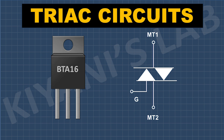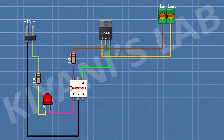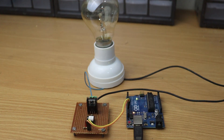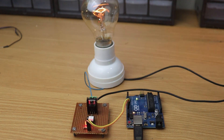Now let's make some example circuits to better understand the working of triac. This is an SSR circuit made with triac. We have also used an optocoupler to isolate the low voltage signal from the high voltage AC signal so that we can use a microcontroller or a low voltage electronic circuit. Let's see how it works.